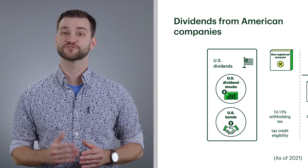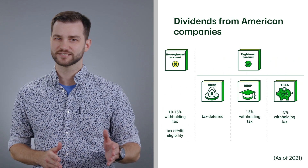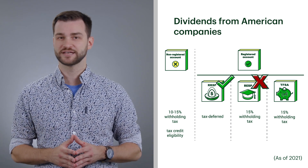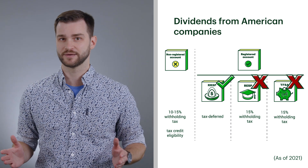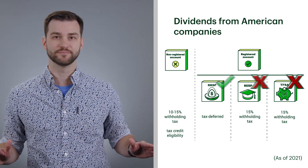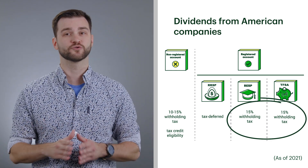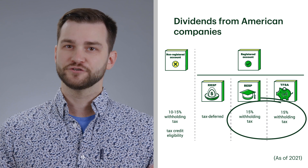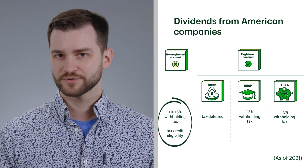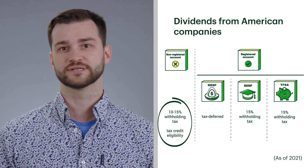There's another wrinkle concerning dividends from American companies. The United States recognizes the tax-deferred status of an RRSP, but does not recognize registered education savings plans or TFSAs in the same way. That means any US-based dividend stocks you hold in them will face a 15% withholding tax, and you also won't be eligible for a foreign tax credit. If you choose to hold US dividend stocks in a non-registered trading account, you'll be hit with a 15% withholding tax, but on the bright side, you'll be able to claim the foreign tax credit.